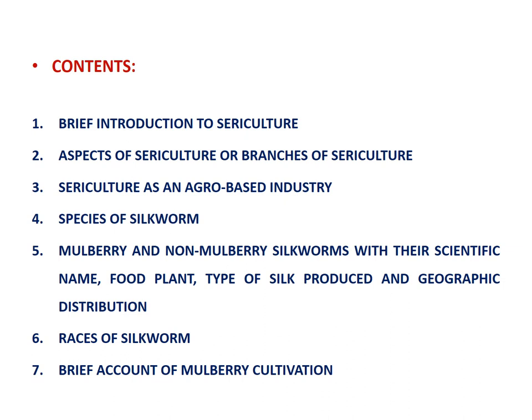The contents of the topic include: brief introduction to sericulture, aspects of sericulture, sericulture as an agro-based industry, species of silkworm, mulberry and non-mulberry silkworm with their scientific name, food plant, type of silk produced, and geographic distribution, races of silkworm, and brief account of mulberry cultivation.